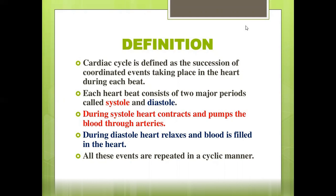The heart has two major events: systole and diastole. Systole is the maximum amount of pressure recorded during a heartbeat — the heart contracts and pumps blood to body parts. Diastole is the minimum pressure — the heart relaxes and fills with blood. These two events repeat in a cyclical manner, which is the cardiac cycle.